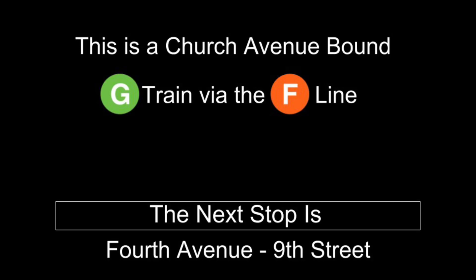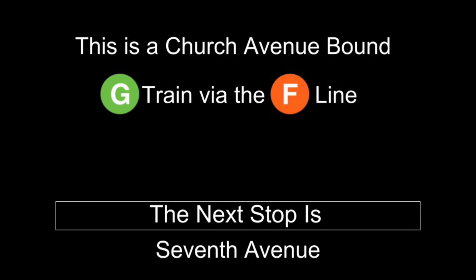This is a Church-Avenue-bound G Train via the F line. The next stop is 4th Avenue, 9th Street. This is a Church-Avenue-bound G Train via the F line. The next stop is 7th Avenue.